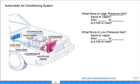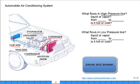So in the high pressure line, what's flowing? Is it liquid or vapor? And where is it going to and from? It's coming from something and going to something. And is it hot or cold? If I grab a hold of it, is it gonna be hot or is it gonna be cold?